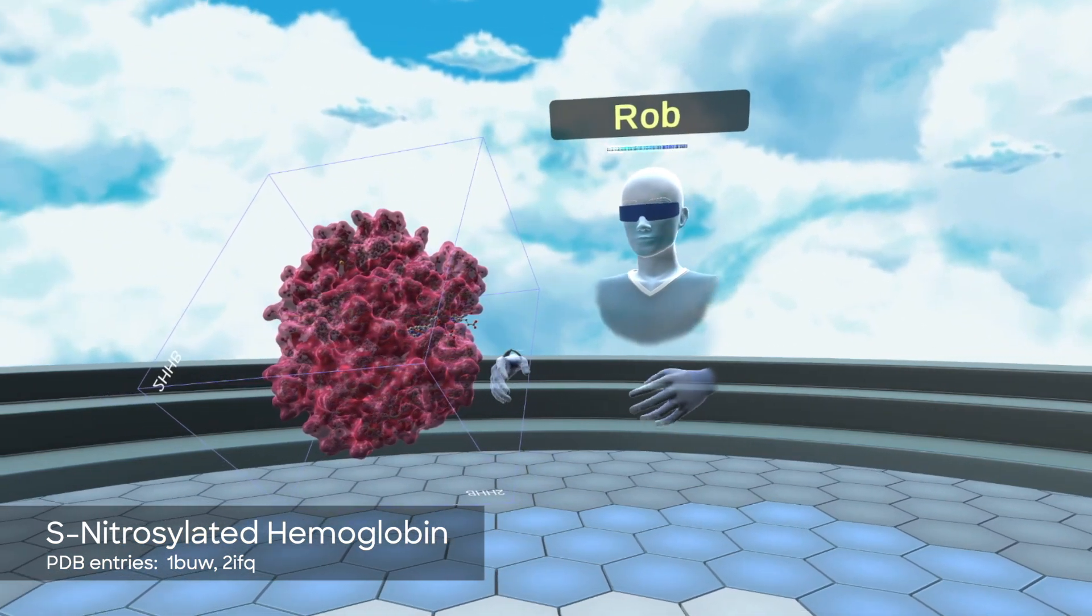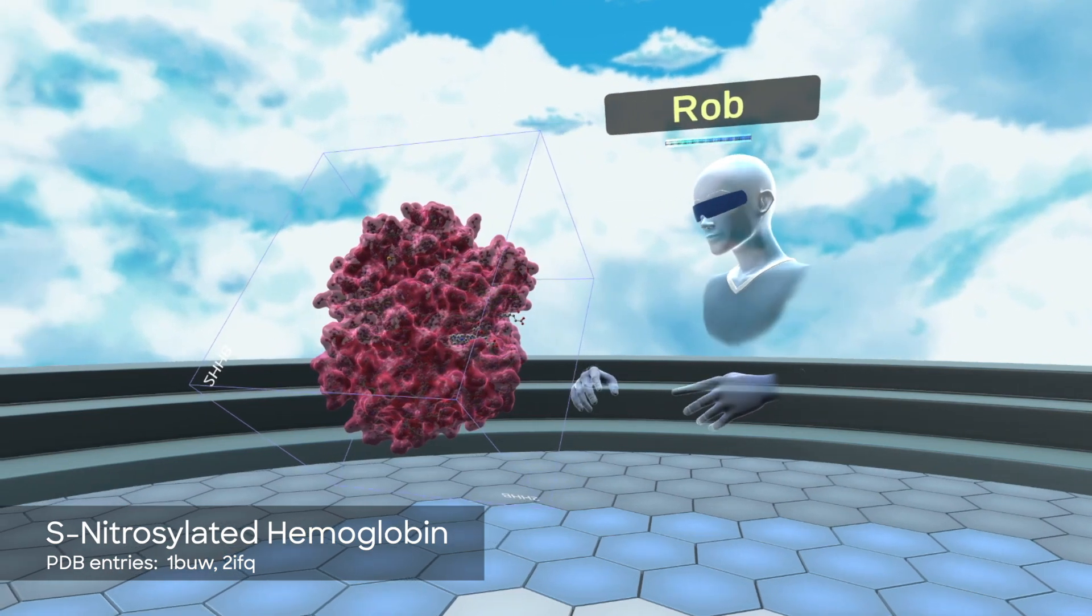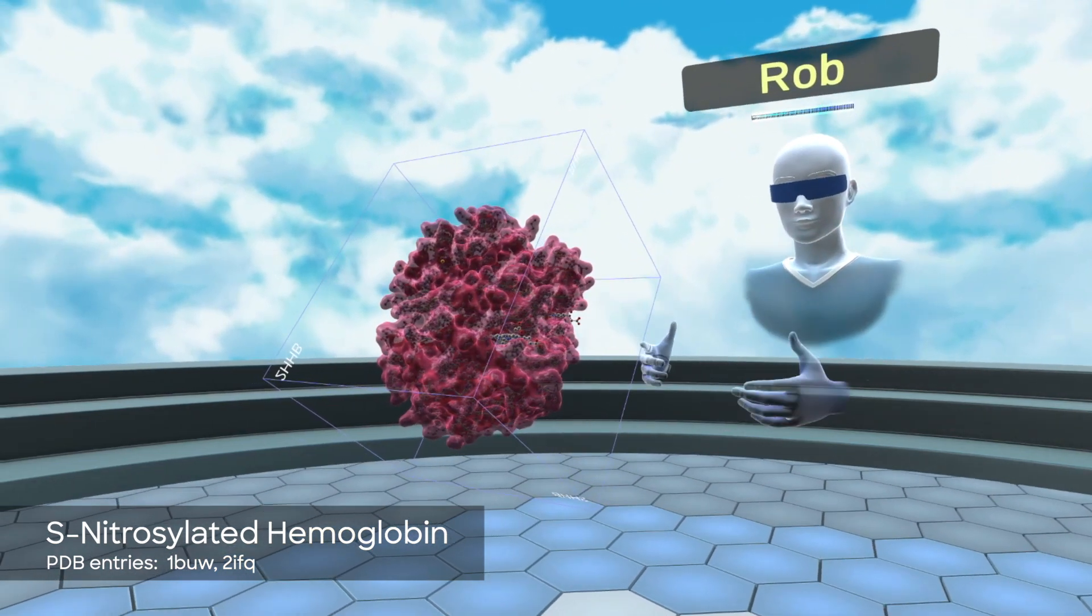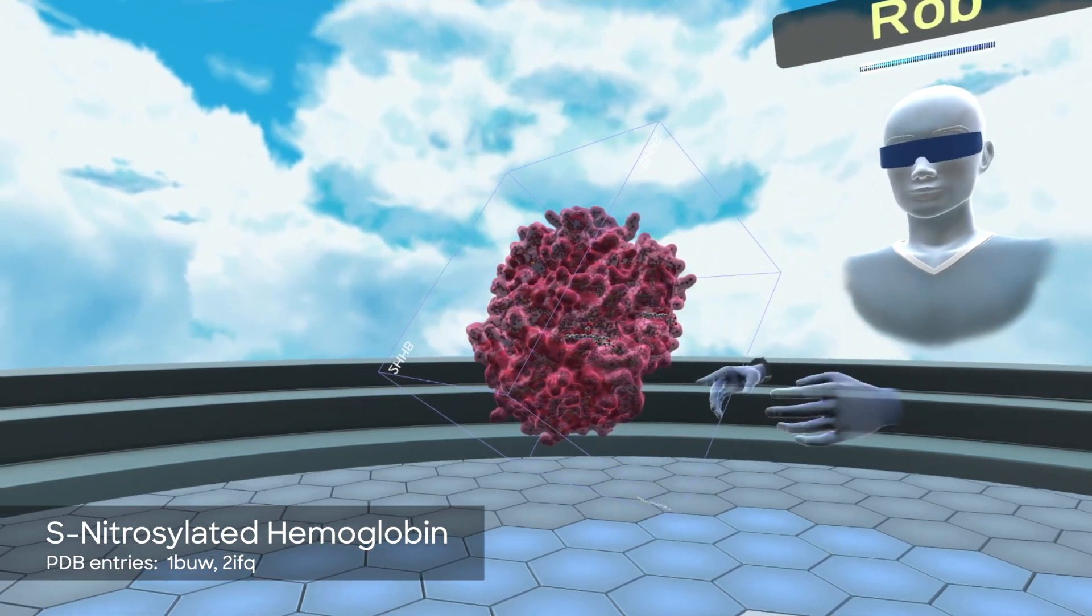Today we're going to be looking at a different form of the hemoglobin molecule, which is bounded to another molecule called nitric oxide. This molecule is super important for regulating the size of your blood vessels and getting blood oxygen to where it needs to go.